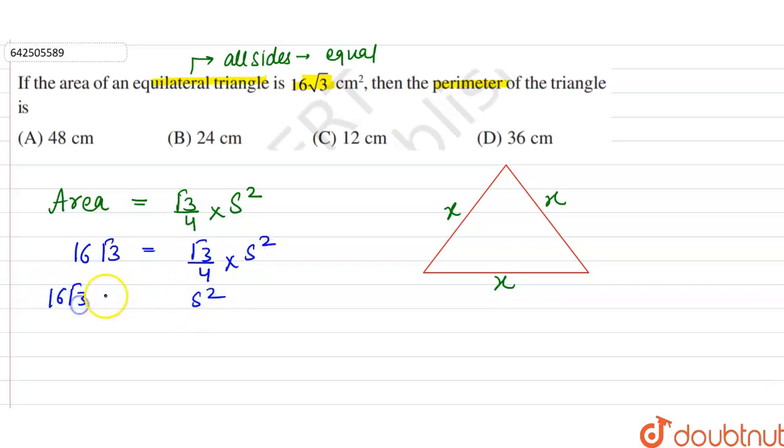√3 will be cancelled with √3, so 16 × 4 is 64. The value of side² is equal to 64.